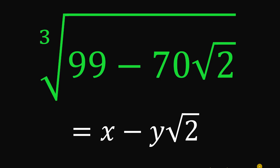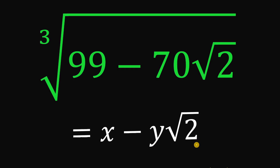Can you solve this math challenge? Here's the question: given the cube root of (99 minus 70 times square root of 2), how can you rewrite this in the form of x minus y times square root of 2? That is the question — pause the video right now and see if you can answer it.